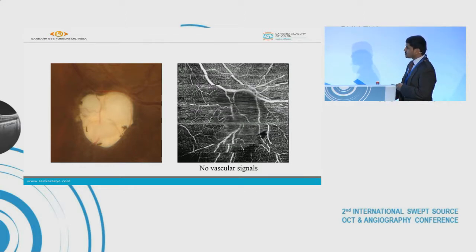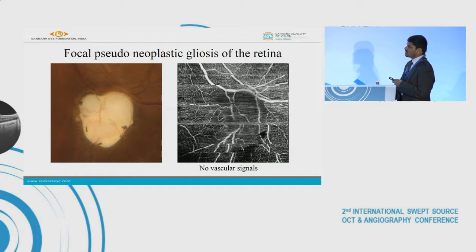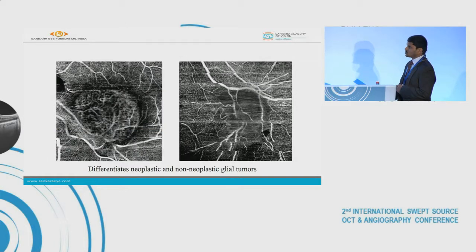But when you perform OCTA, we see that there are no vascular signals within the lesion. This points to a diagnosis of a non-neoplastic lesion, probably focal pseudo-neoplastic gliosis of the retina. So OCTA can help us in differentiating a neoplastic lesion from a non-neoplastic lesion.